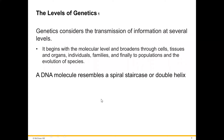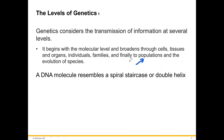Genetics considers the transformation of information at several levels. It begins with the molecular level and broadens through cells, tissues, organs, individuals, families, and finally to populations and to the evolution of species. A DNA molecule resembles a spiral staircase or double helix. Most of the human DNA is located inside the nucleus. DNA is organized into a structure called chromatin, and chromatin forms chromosomes.